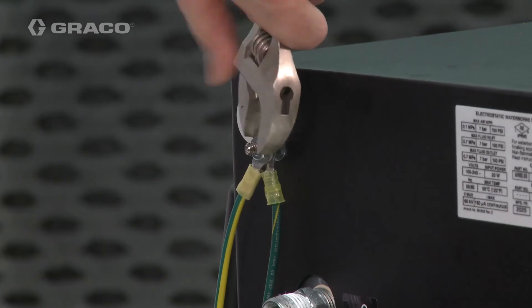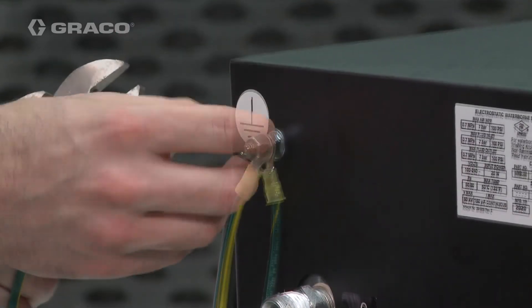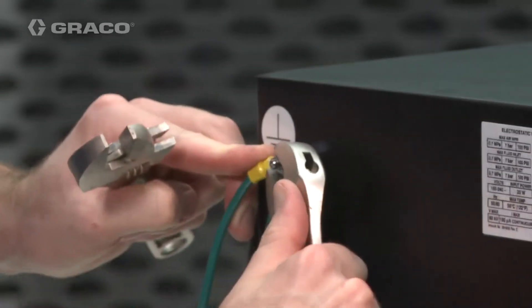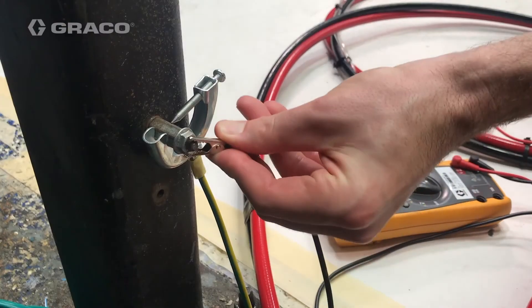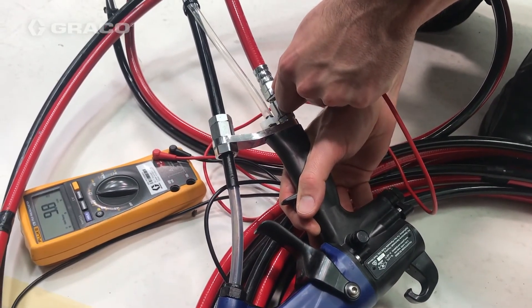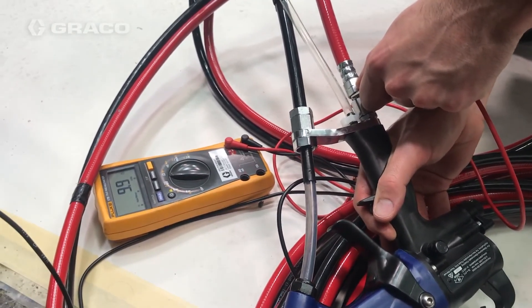Connect the air hose from the gun to the air outlet on the isolation cabinet. Then, attach the ground wire to a true earth ground. Check the resistance between the gun handle and a true earth ground. The resistance must be less than 100 ohms.